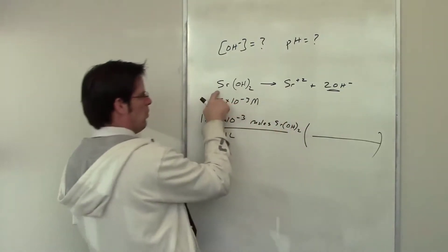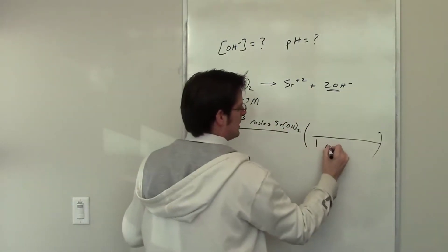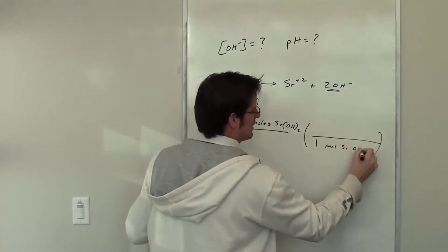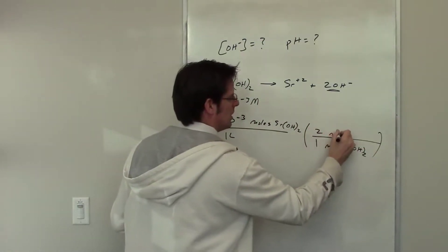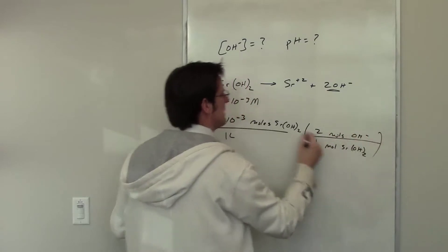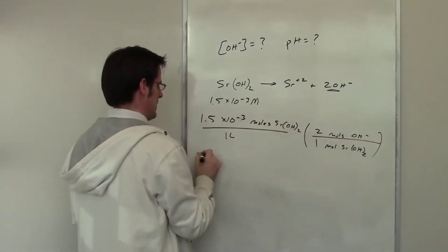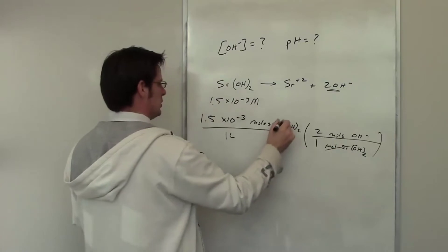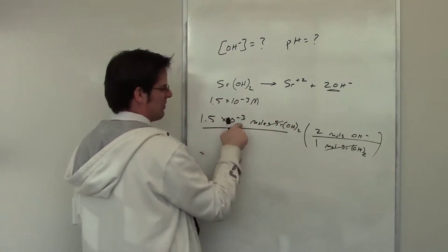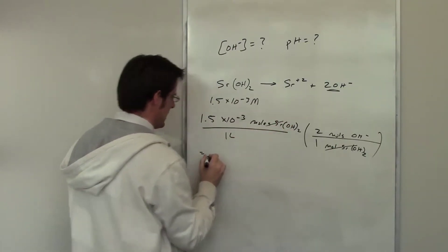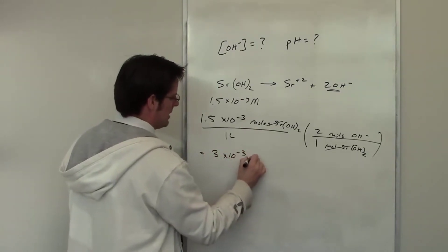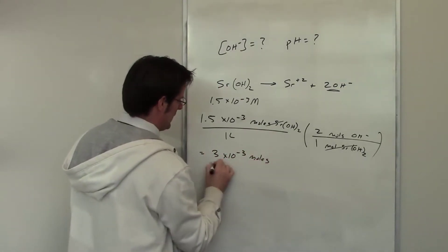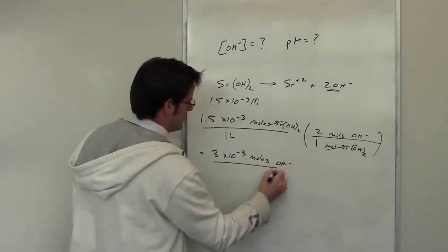I can write down stoichiometrically, you can see that for every 1 mole of strontium hydroxide, you've got 2 moles of hydroxide coming out of it. I throw that in my calculator or my brain, and you'll see that if my solution starts out as 1.5 times 10 to the negative third molar strontium hydroxide, it ends up being 3 times 10 to the negative 3 moles per liter or molar of hydroxide product.